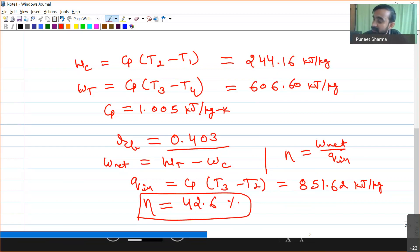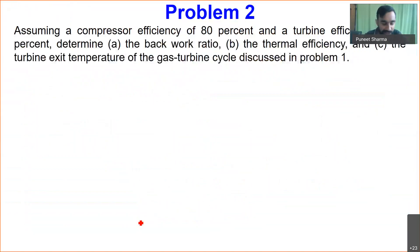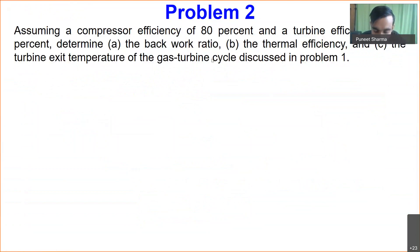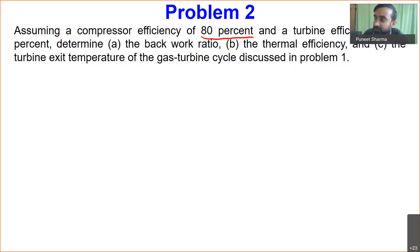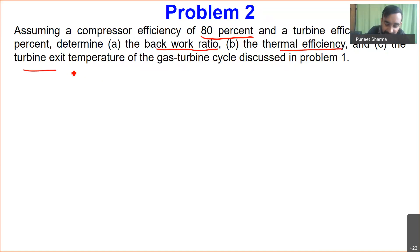Now let me consider the next problem. In the second question, we assume a compressor efficiency of 80% and a turbine efficiency of 85%. Based on these two efficiencies, we have to determine the back work ratio, thermal efficiency, and turbine exit temperature of the gas turbine cycle described in Problem 1.